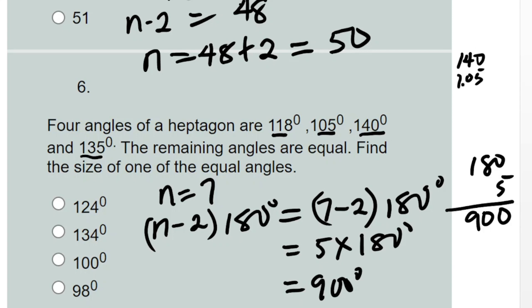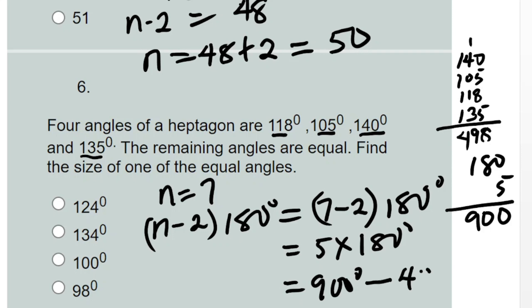Adding the four given angles: 140 plus 105 plus 118 plus 135. Adding them gives us 498. So we subtract: 900 minus 498 equals 402 degrees.